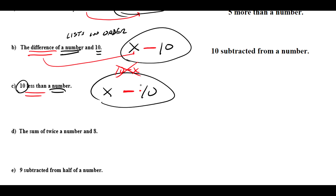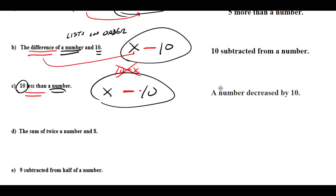You'll notice this has the exact same expression as the previous part. There are a lot of different ways in English to express the same mathematical expression. Another way to say this is 'a number decreased by 10' — 'decreased by' works the same way, and the result x − 10 is the same.